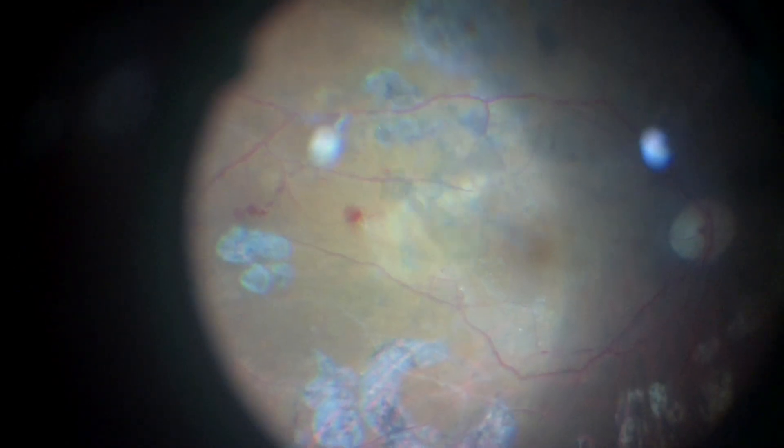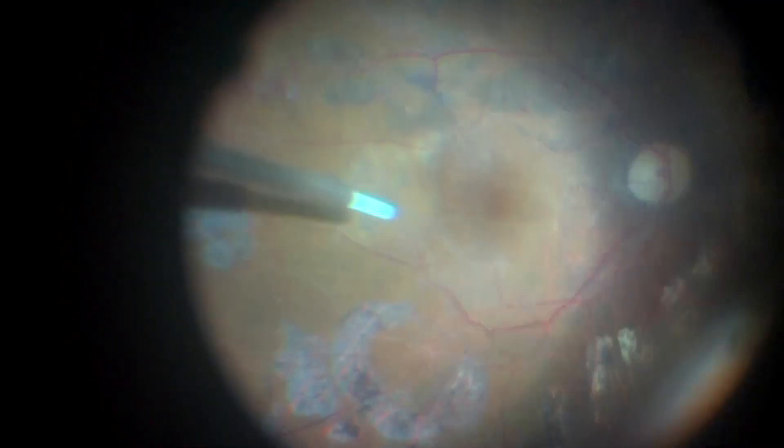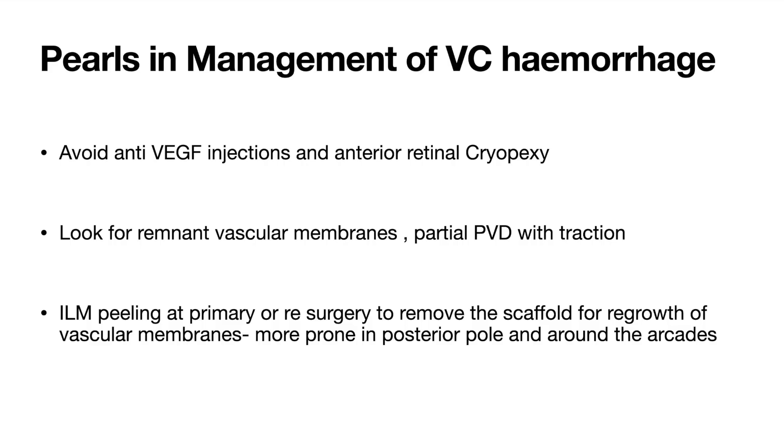Now we come to the actual new vessel that caused the recurrent vitreous hemorrhage in this case, which is pretty tricky, as it adheres to the major vessel posteriorly. Once an edge was formed from both sides, we attempt to remove it by dragging the membrane along the major vessel rather than pulling it vertically. Any bleeding areas are coagulated with photocoagulation.